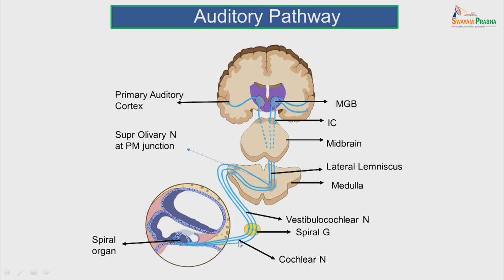The pathway starts from the cochlear nerve from the inner ear, relays in the spiral ganglion, then in the medulla, and then in the superior olivary nucleus at the pontomedullary junction. From there, the ascending lateral lemniscus has crossed and uncrossed fibers passing through the midbrain. It relays in the inferior colliculus at the level of the midbrain, then the fibers relay in the medial geniculate body situated in the posterior-most aspect of the thalamus, and are finally relayed in the primary auditory cortex of areas 41 and 42.